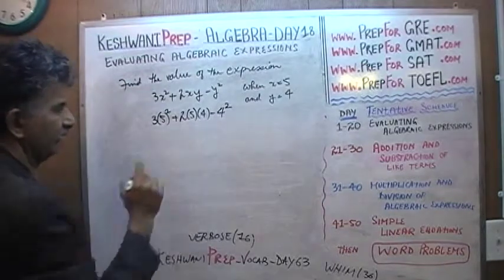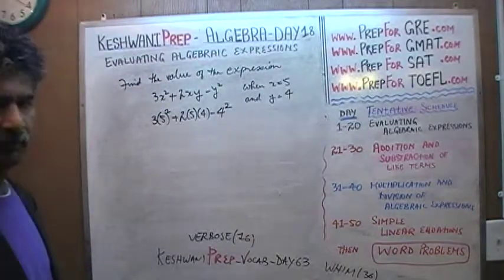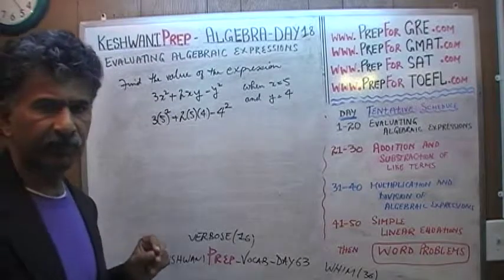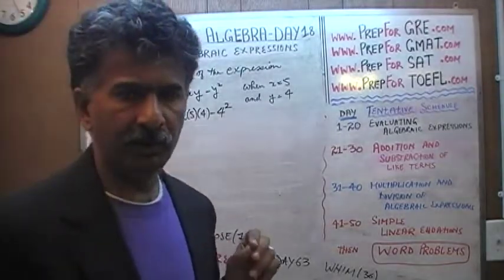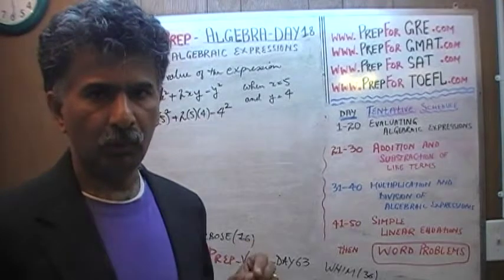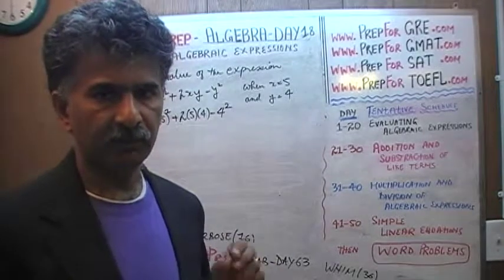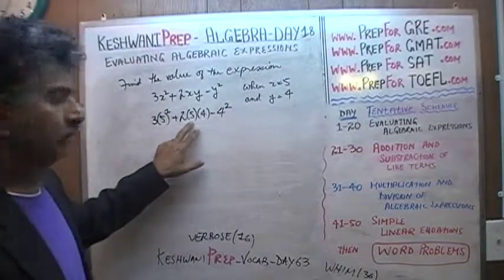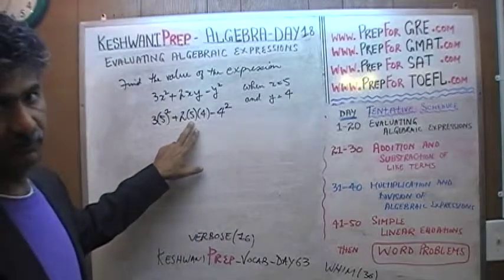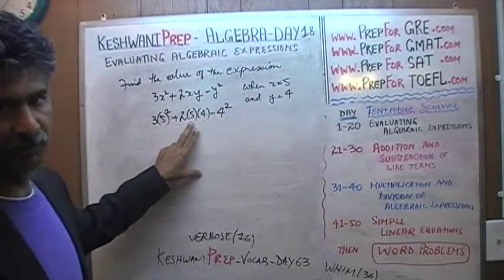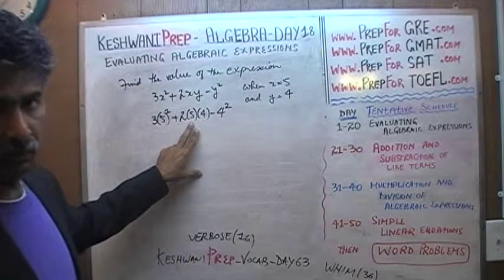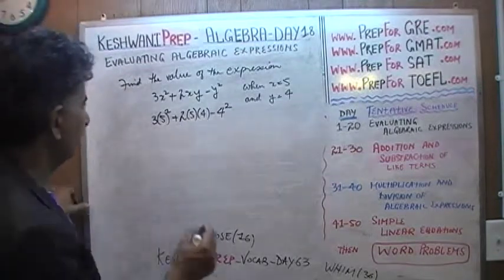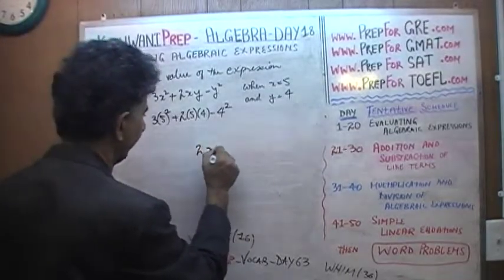Don't worry about where these parentheses are coming from — as I've explained many times in my previous videos. You must watch these videos from day one and go in sequence. Do not skip any videos, and if you have done so, you understand where these parentheses are coming from. They do serve a purpose. They're put in there because we have to show 2 times x times y.